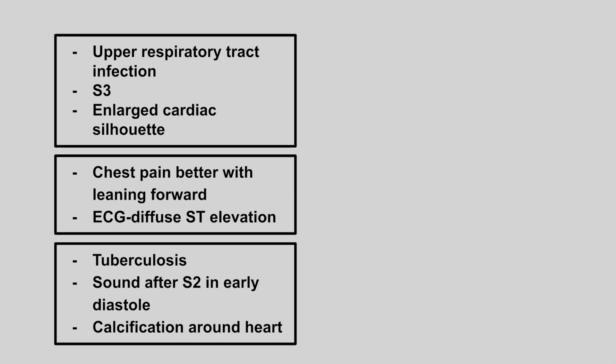The next one is someone who presents with an upper respiratory tract infection, an S3, and an enlarged cardiac silhouette. This is viral myocarditis.